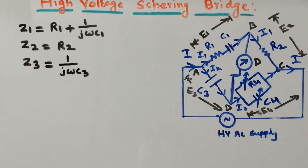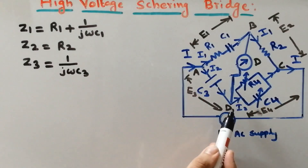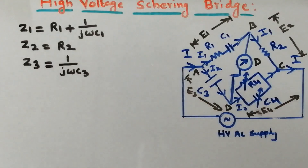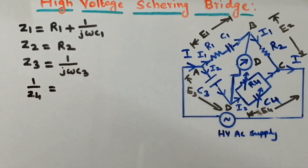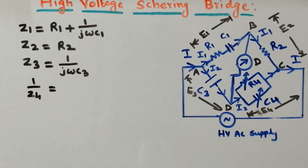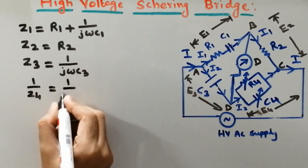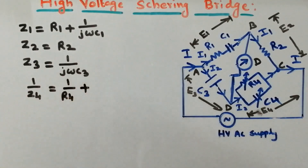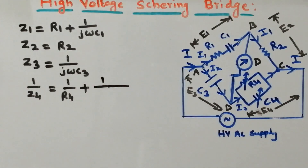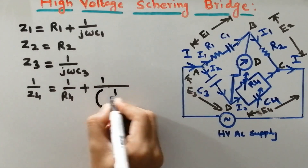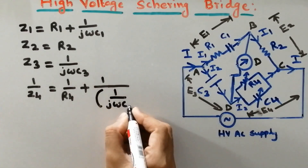Now I would like to calculate the impedance of arm DC. Both R4 and C4 are connected in parallel. So, 1 by Z4 is equal to 1 by R4 plus jωC4.